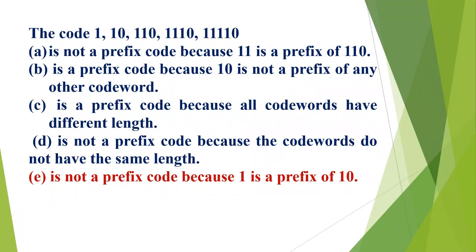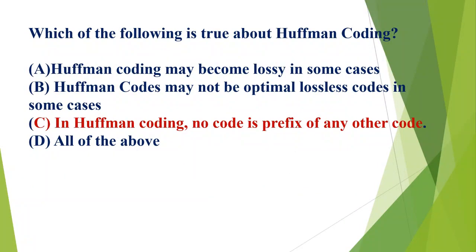The code 1 1 0 | 1 1 0 | 1 1 1 0 | 1 1 1 1 0: A) is not a prefix code because 11 is the prefix of 110, B) is a prefix code because 10 is not a prefix of any other codeword, C) is a prefix code because all codewords have different length, D) is not a prefix code because codewords don't have the same length, E) is not a prefix code because 1 is a prefix of 10. The correct option is E. Which of the following is true about Huffman coding? A) may become lossy in some cases, B) may not be optimal lossless code in some cases, C) no code is prefix of any other code, D) all of the above. The correct option is C.